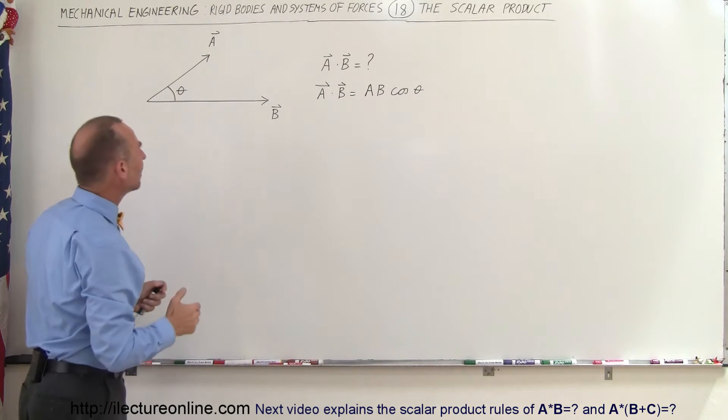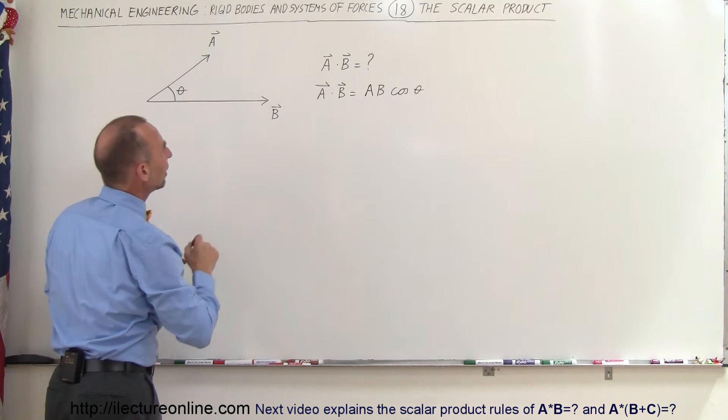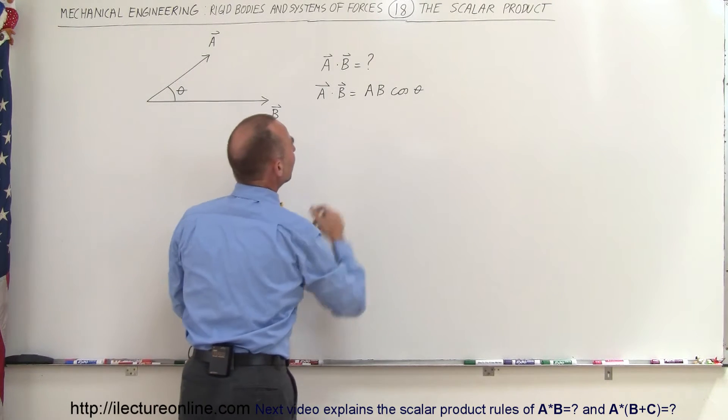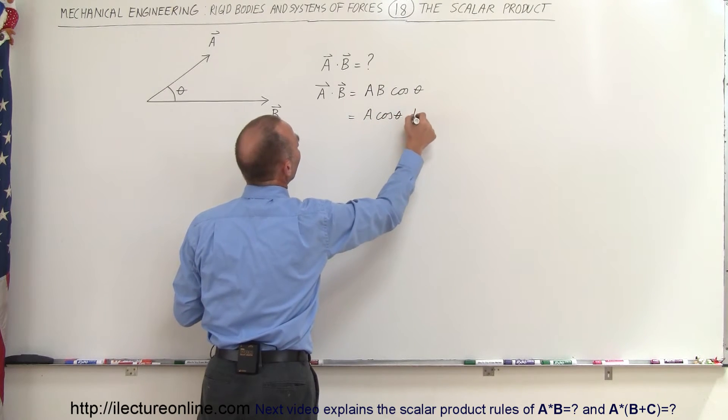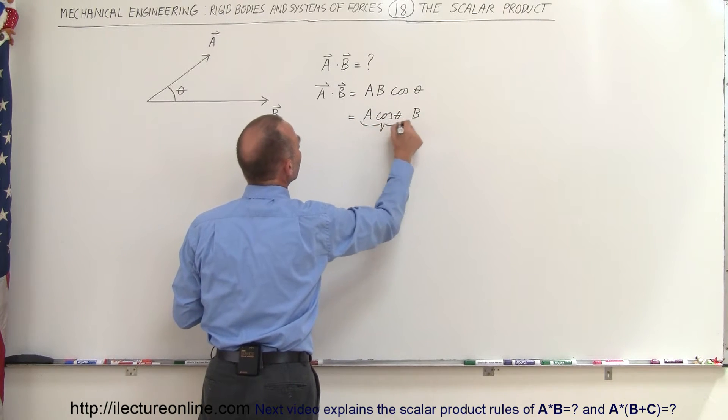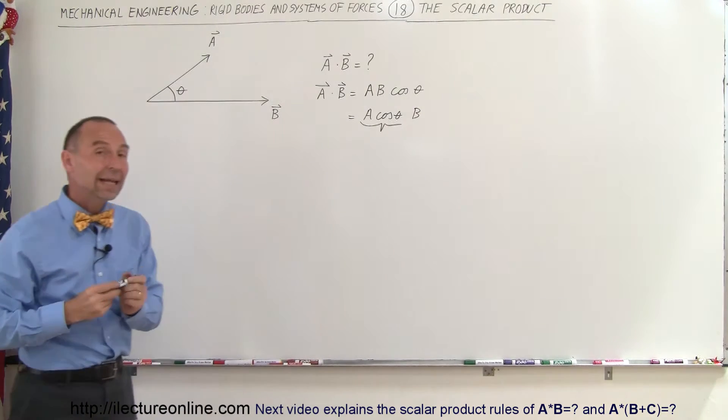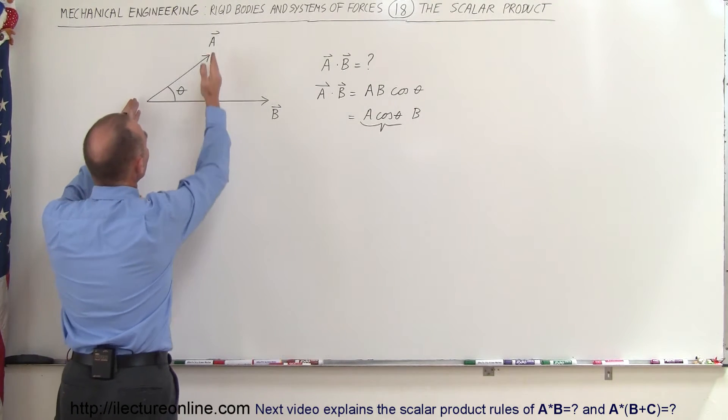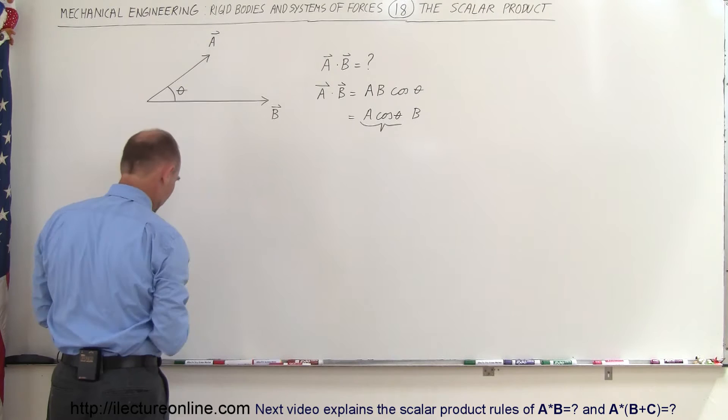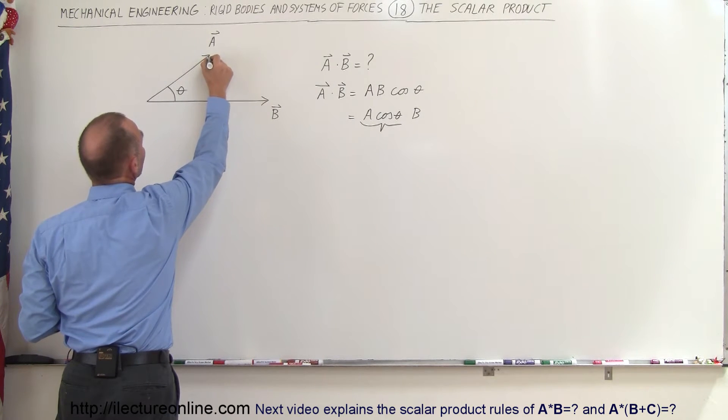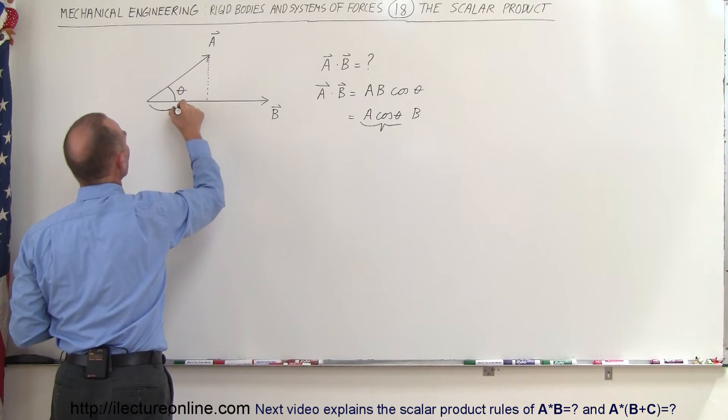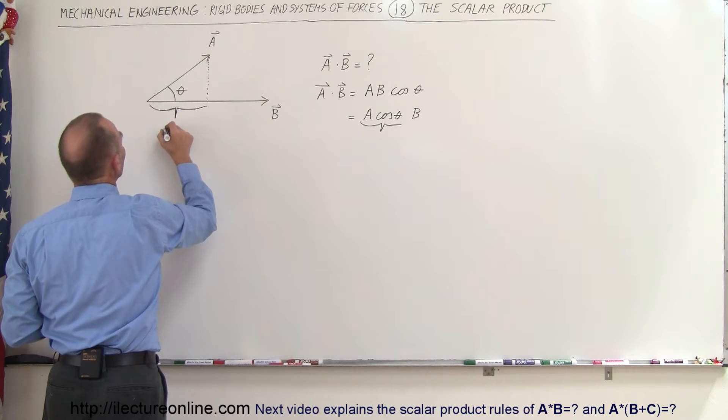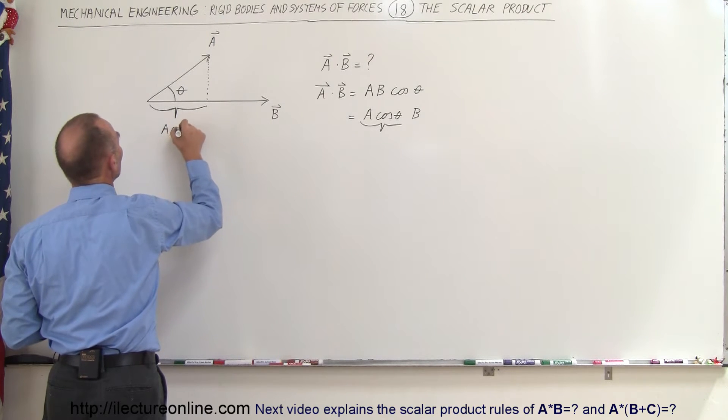Well, one way to look at it is, what do we mean by A cosine theta? Let me rewrite that. So we write this as A times the cosine of theta times B. What is this quantity equal to? Well, that quantity, in essence, is a projection from the vector A onto the vector B. If we draw a perpendicular line from the tip of vector A down to vector B, then this length right here, which we can call the projection of A on B, has a length of A times the cosine of theta.